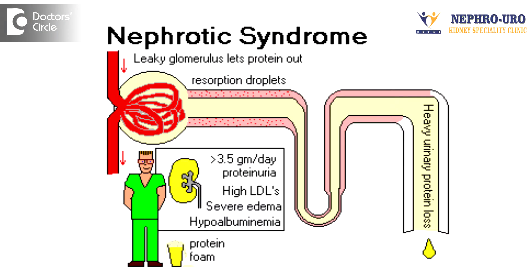Nephrotic syndrome is a condition where the patient will be losing a lot of proteins, and there are various causes for it. In general, the complications of nephrotic syndrome are: it can damage the kidney and the patient can land up in dialysis. Patients who are already on dialysis and receiving a kidney transplantation can have recurrence of the same disease.